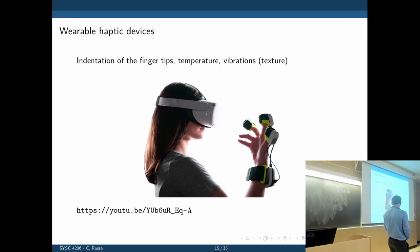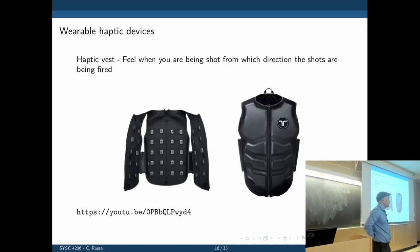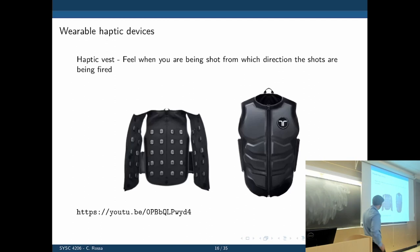Here's another wearable haptic device — the actuator is in a vest. If you're doing a shooting game, you can feel where hits are coming from. Each of these are actuators that vibrate, strong enough to emulate the sensation of interacting in that environment.